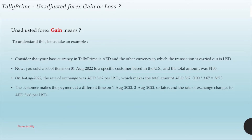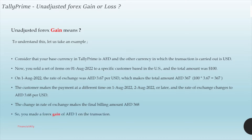The customer makes the payment at a different time — on 1st of August, 2nd of August, or later — and the rate of exchange has changed to AED 3.68 per dollar at that point. So when they make the payment, we will receive AED 368 instead of the invoice value of AED 367. So you have made a profit of 1 in this transaction. This is called unadjusted forex gain.